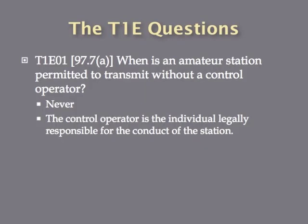The first question: when is an amateur station permitted to transmit without a control operator? This is an easy answer — it's never. The control operator is the person who is legally responsible for the conduct of the station, so it's a licensed radio amateur who is responsible to ensure that the station operates within FCC regulations. So an amateur station is never permitted to transmit without a control operator.